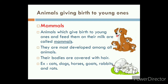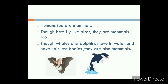Let us see about animals which give birth to young ones. First of all, mammals. Animals which give birth to young ones and feed them on their milk are called mammals. They are the most developed among all animals, and their bodies are covered with hair. Examples include cats, dogs, horses, goats, rabbits and rats. Humans too are mammals. Though bats fly like birds, they are mammals too. Though whales and dolphins move in water and have hairless bodies, they are also mammals.